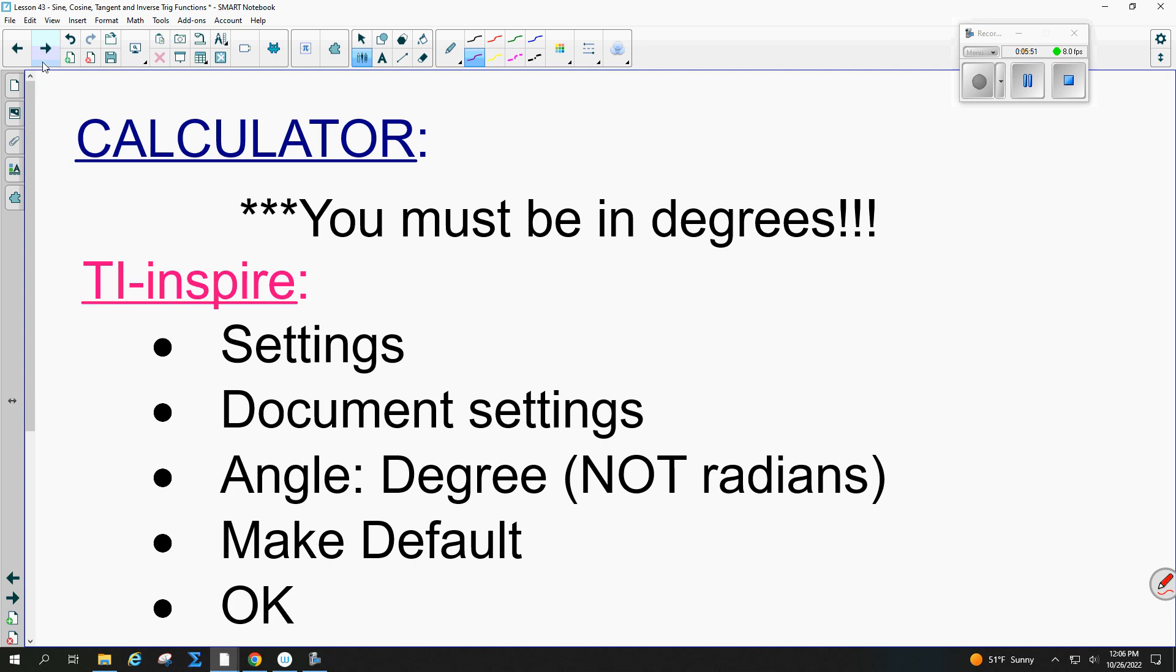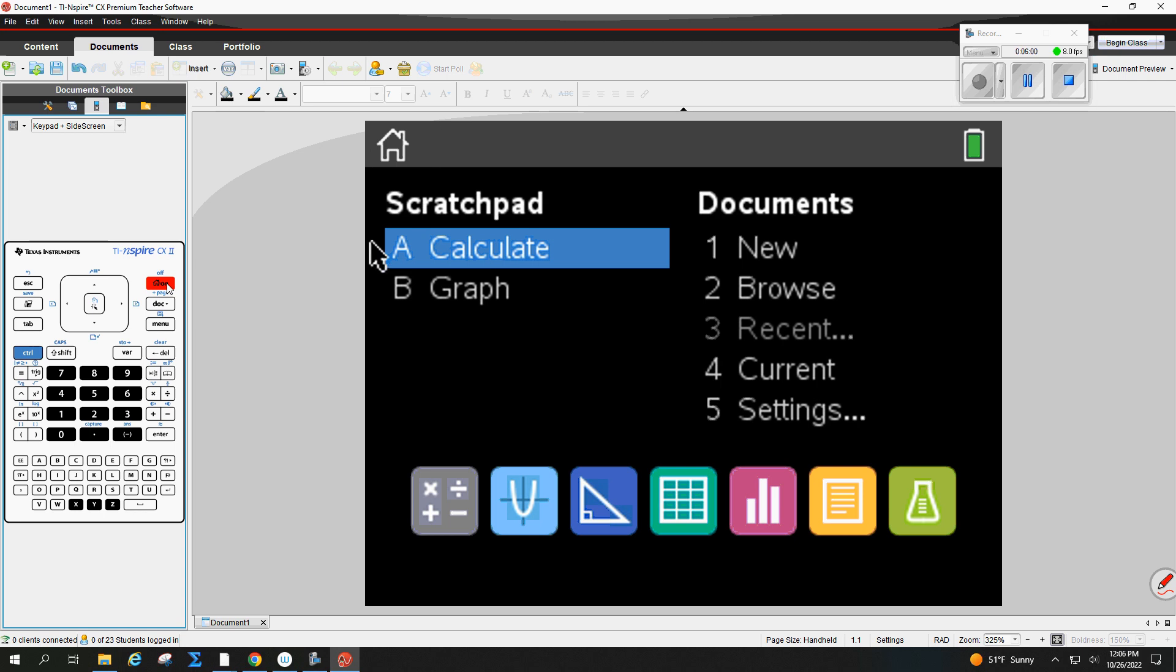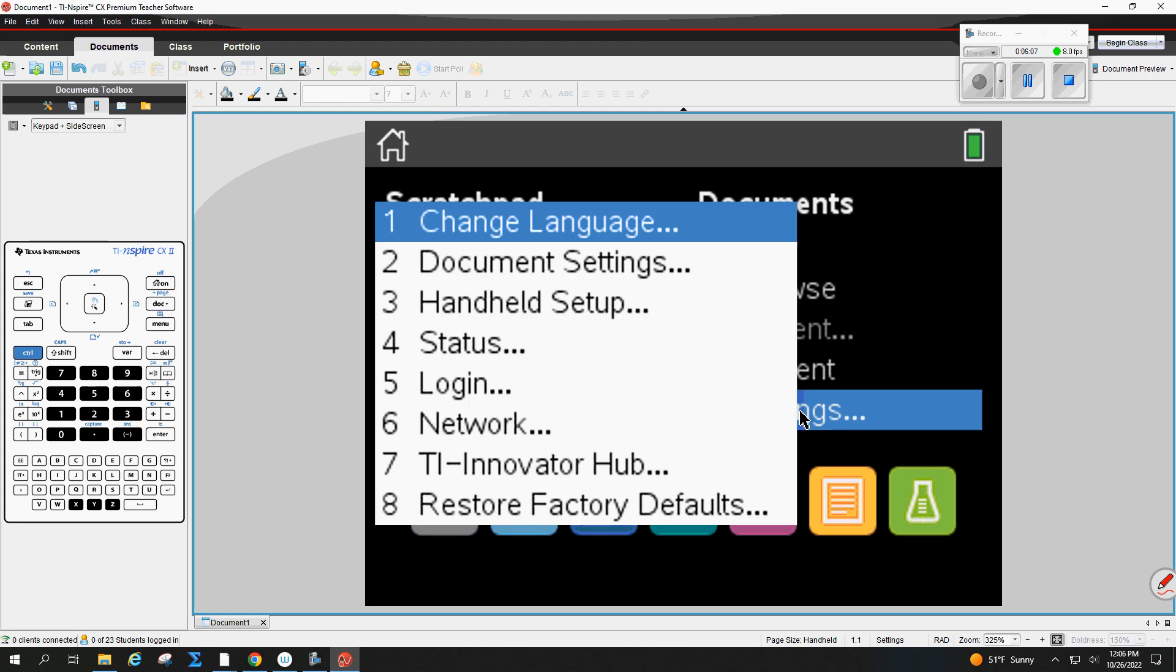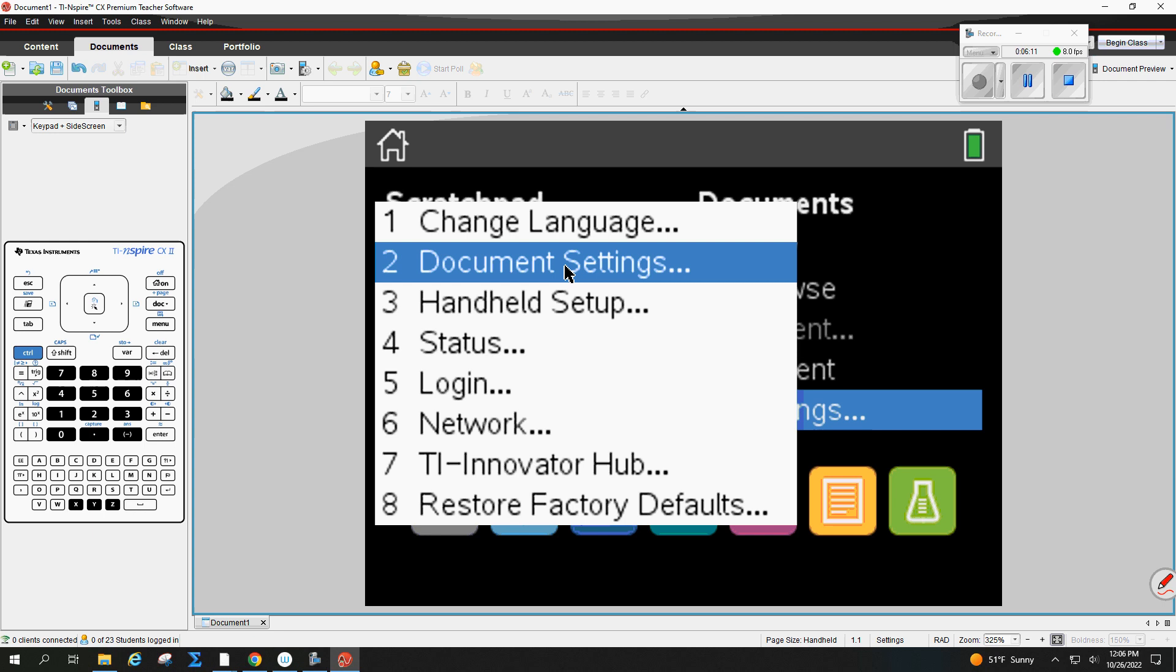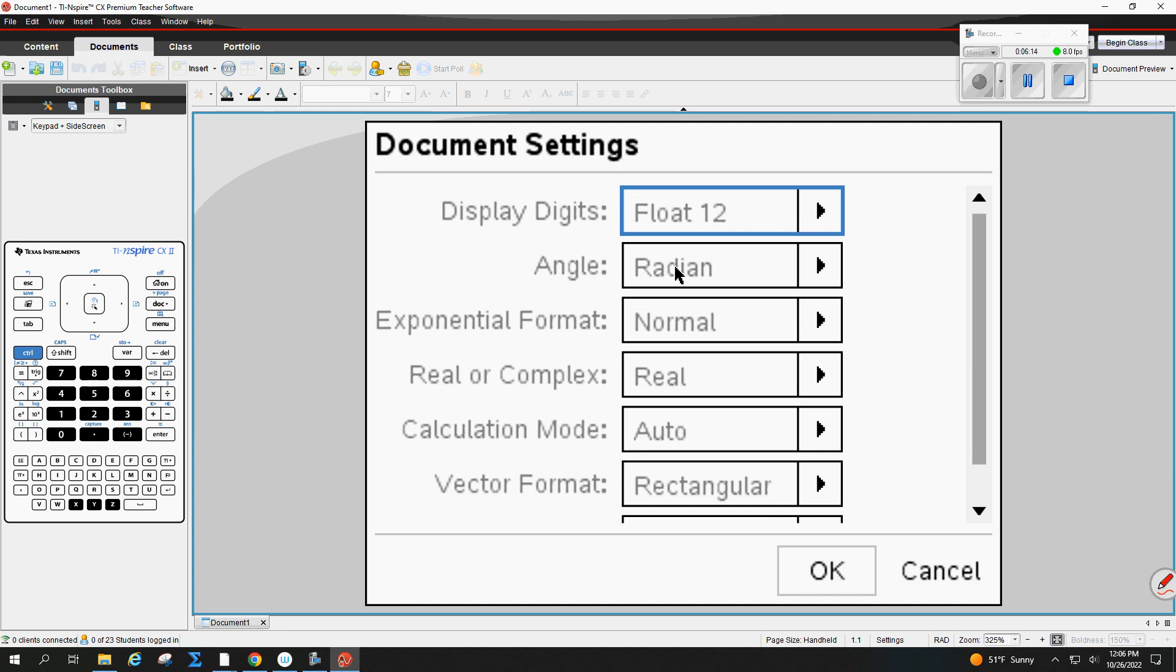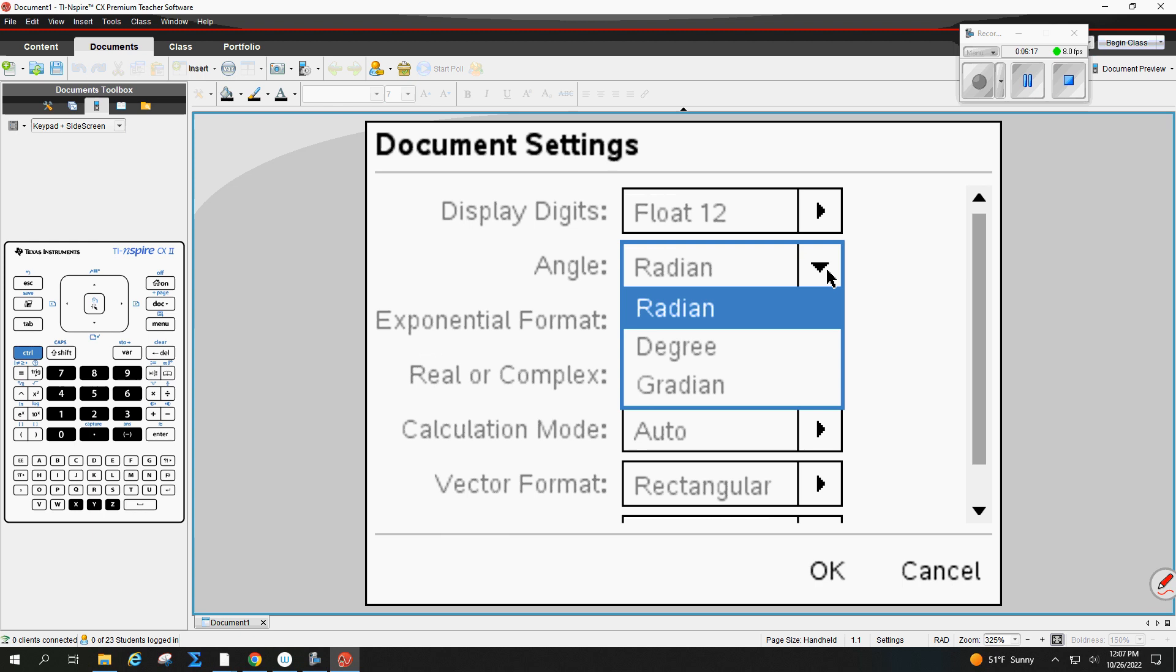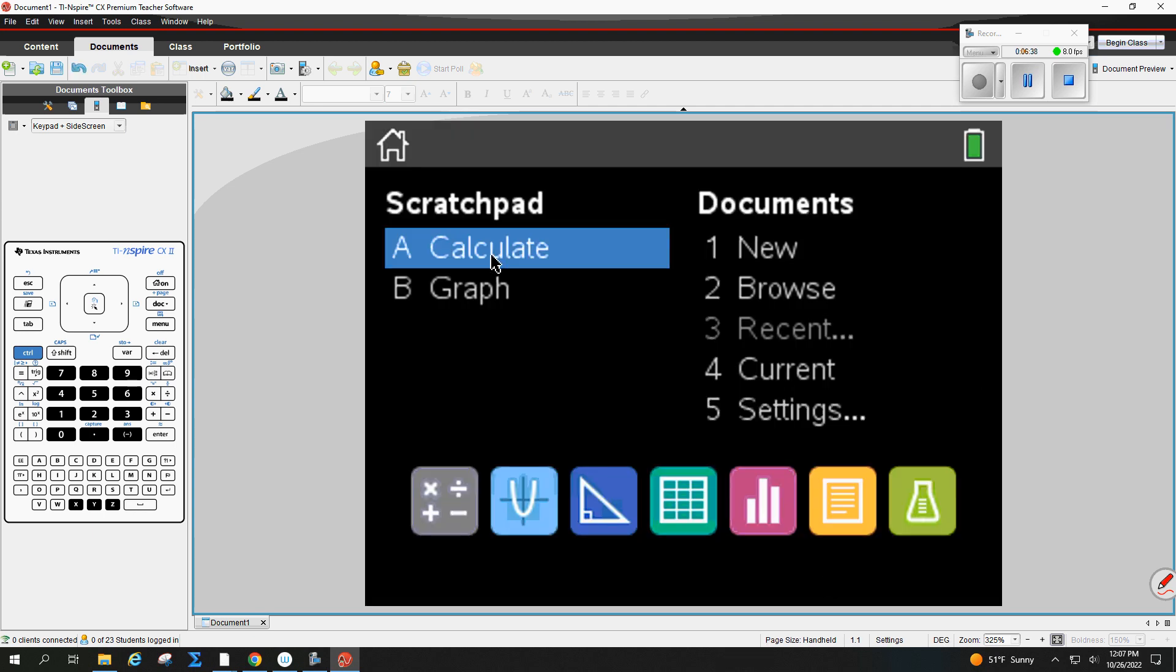Calculators. So you must be in degrees or this doesn't work. Go to the home screen, then go to settings, and then go to document settings. Notice my angles in radians, that's a problem. We want our angle to be in degrees. So change that to degrees. A radian is when you count by pies around the circle, which you will learn. Go to degrees and go to calculate.